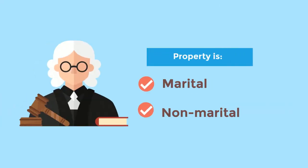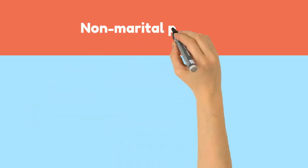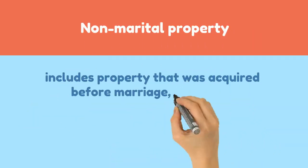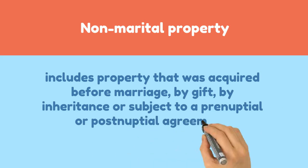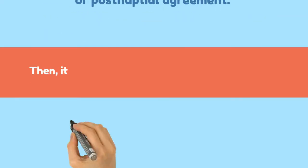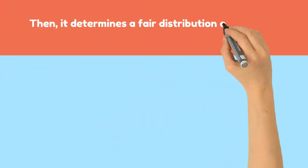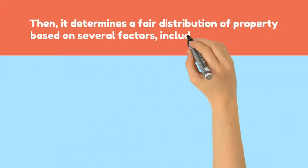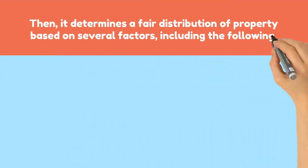Non-marital property includes property that was acquired before marriage, by gift, by inheritance, or subject to a prenuptial or postnuptial agreement. The court then determines a fair distribution of property based on several factors.